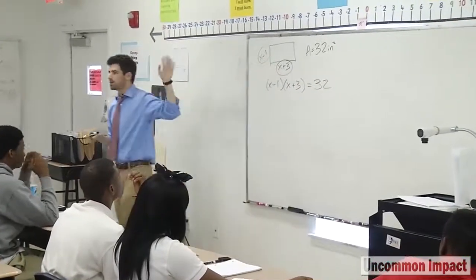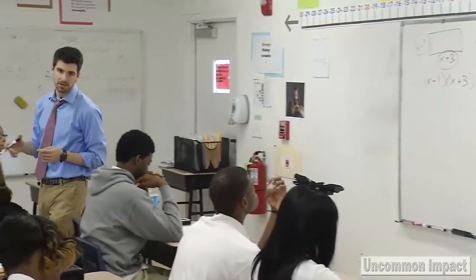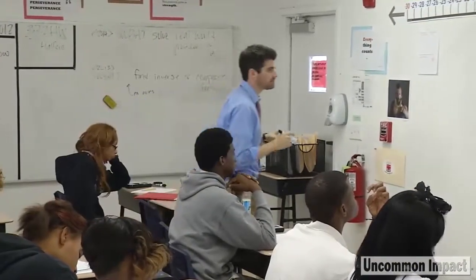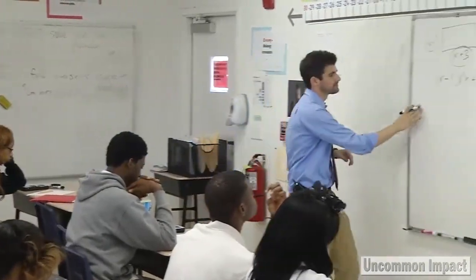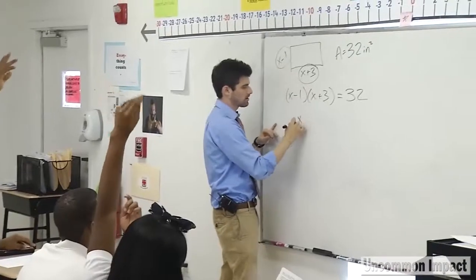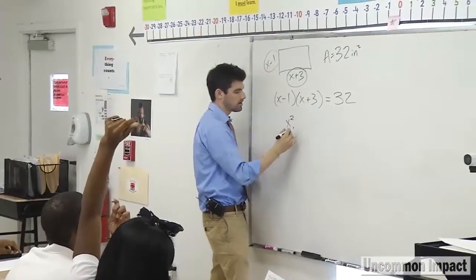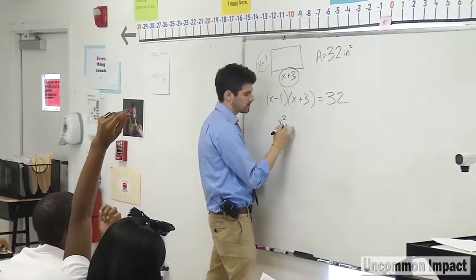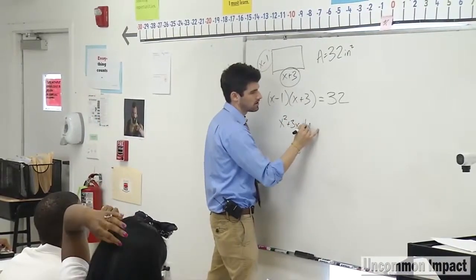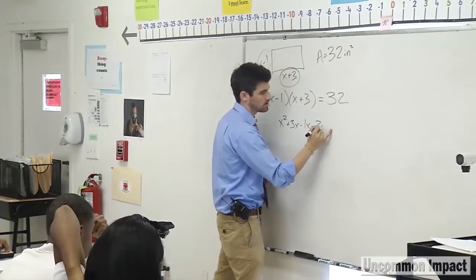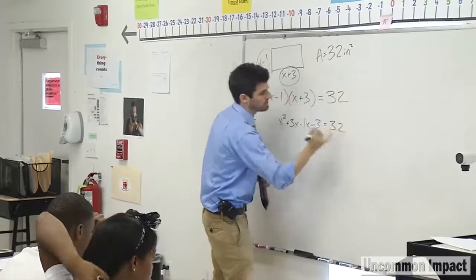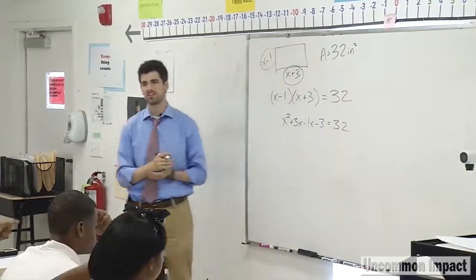Now, you guys are foil champions. I don't want to waste your time by doing that. When you foiled it out, Ange, what did you get? It's x squared plus 3 minus 1x minus 32 equals 32. OK, we're not finished though. What do we need to do?